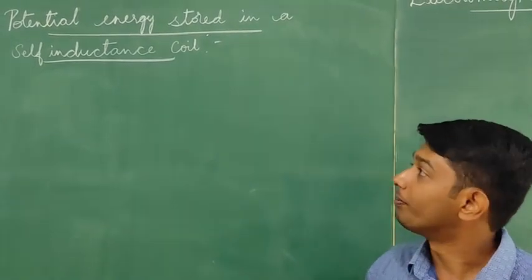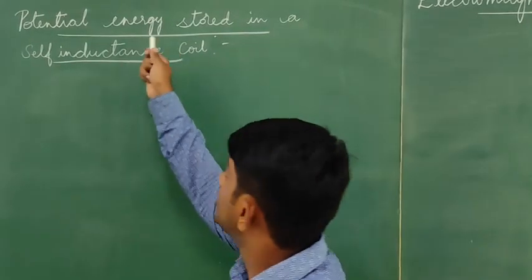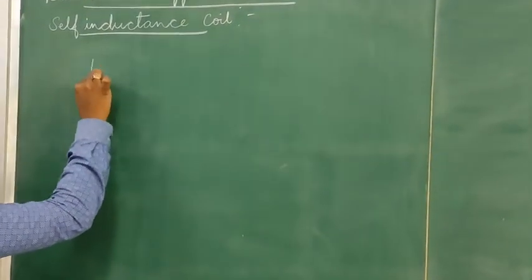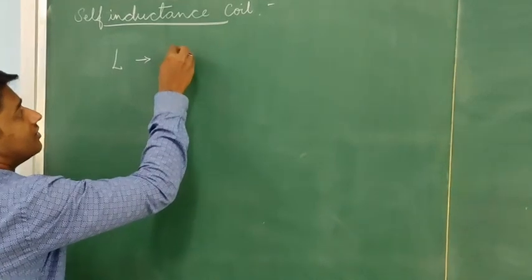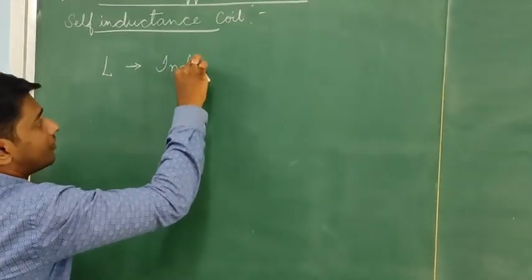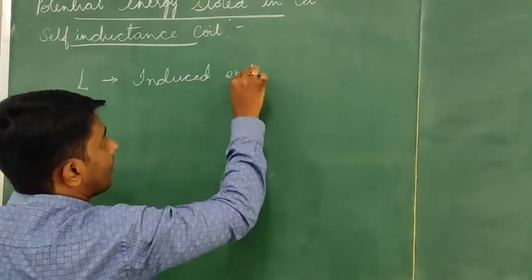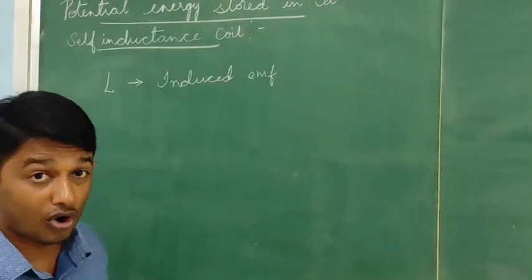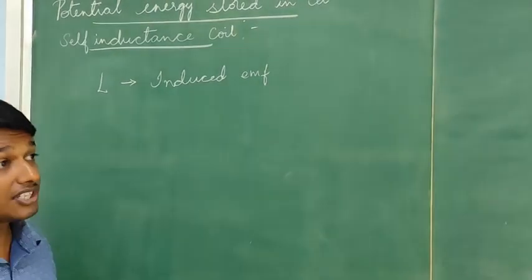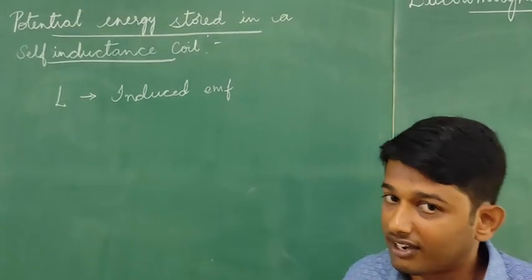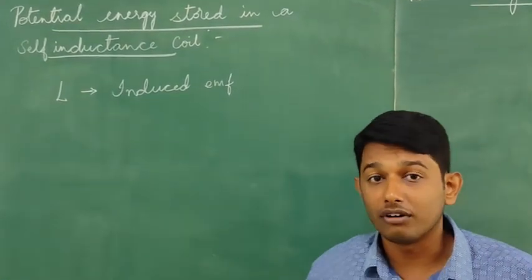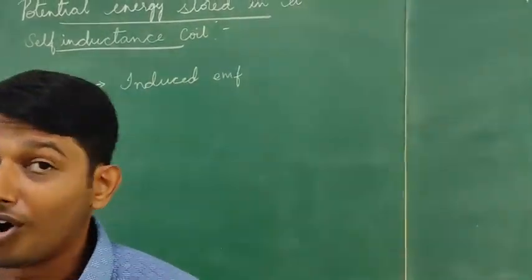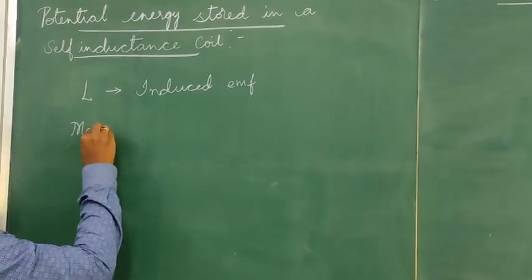Let us move on to the next topic: derive the expression of potential energy stored in a self-inductance coil. Consider a self-inductance coil L which produces an induced EMF. This induced EMF will oppose any change in current formed in this coil. For this induced EMF to oppose any kind of current, a certain amount of work has to be done in this self-inductance coil. This work done is stored as magnetic potential energy.